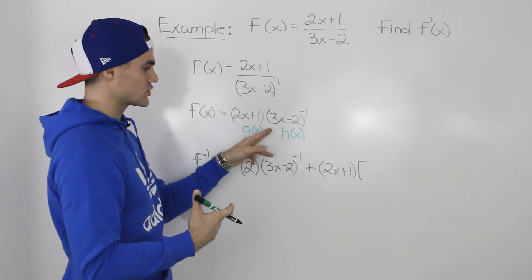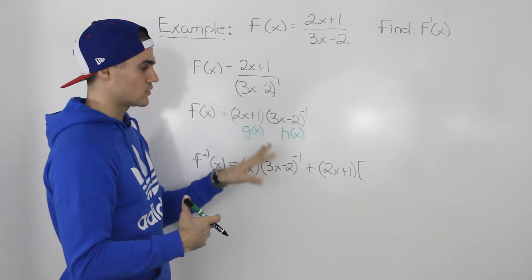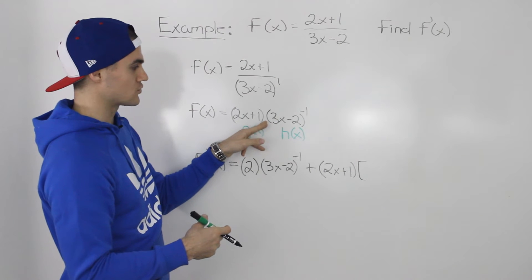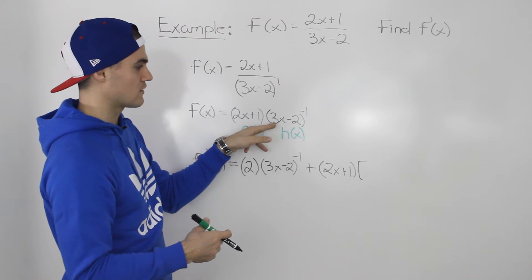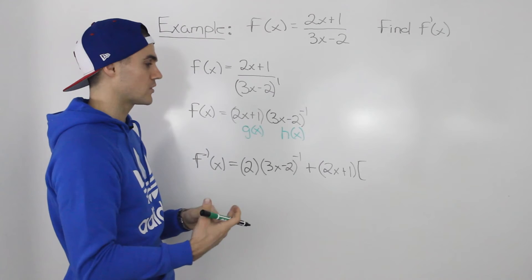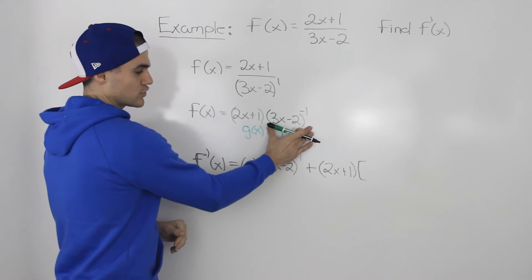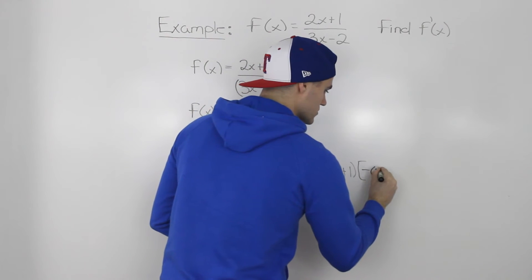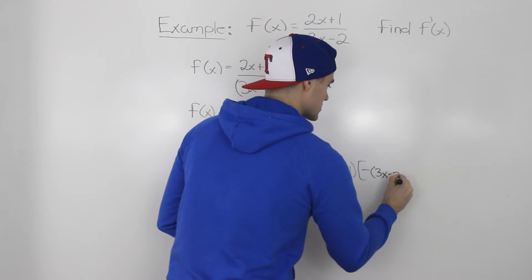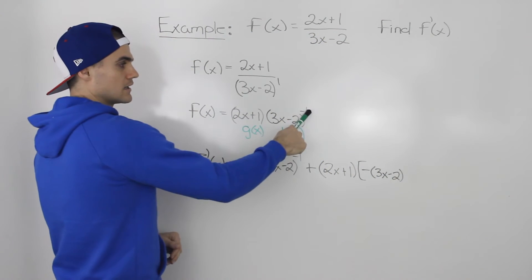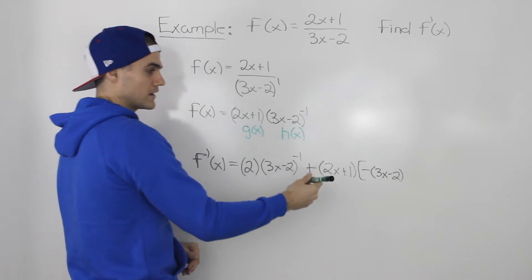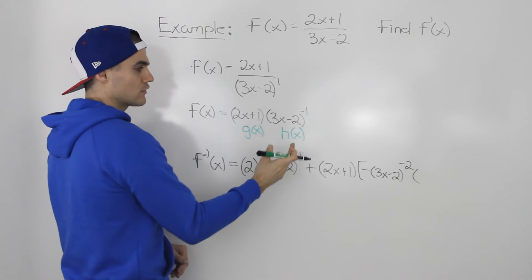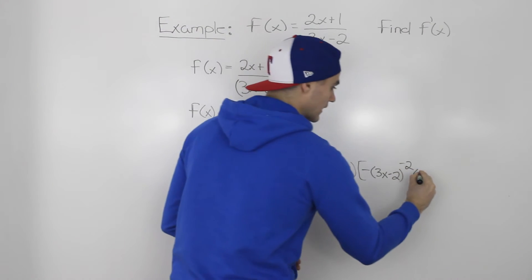If you haven't gone over the power of a function overview video, I would pause this video, go to the curriculum, and make sure you go over that so you're comfortable with finding the derivative of a function to the power of a real number. Applying the power of a function rule on h of x, we bring the negative 1 down, so it would be 3x minus 2, leaving that function in the bracket as it is, subtracting 1 from the exponent — negative 1 minus 1 is negative 2 — and then we find the derivative of that inner function. The derivative of 3x minus 2 is 3.